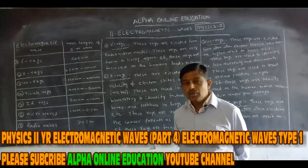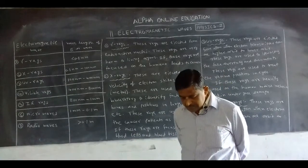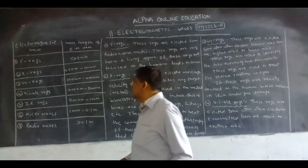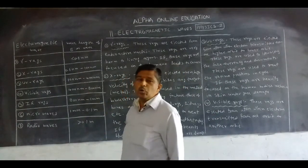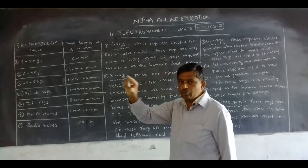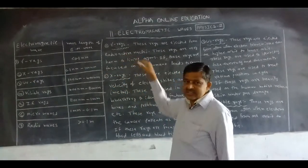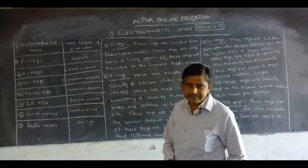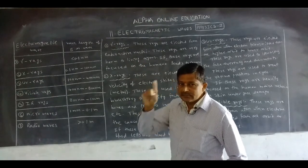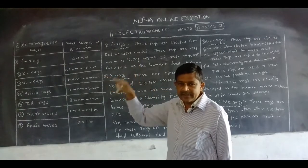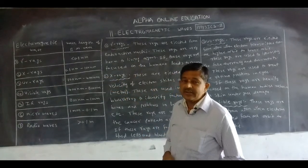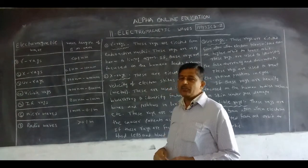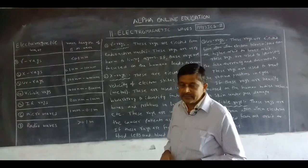Electromagnetic waves — there are totally 8 types, but in our syllabus we have only 7 types. When electromagnetic waves fall on a photographic plate, they form lines on it, which is called the electromagnetic spectrum. From those lines, the electromagnetic waves are divided into 7 types.